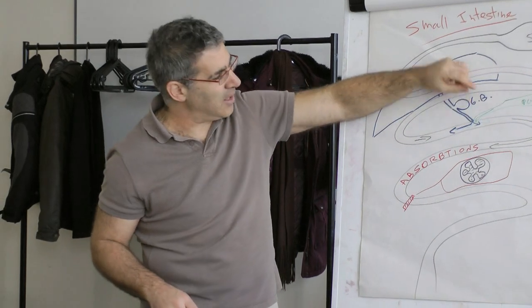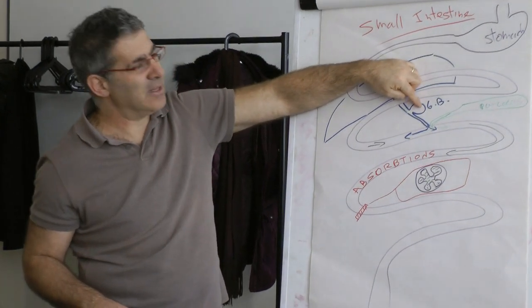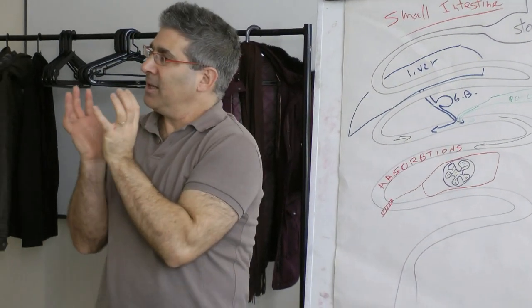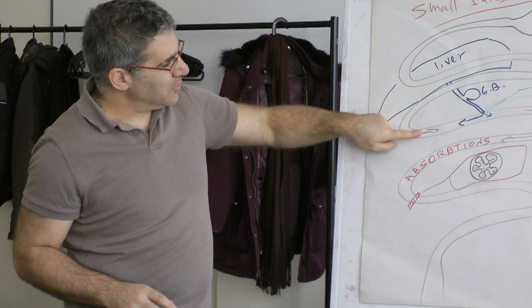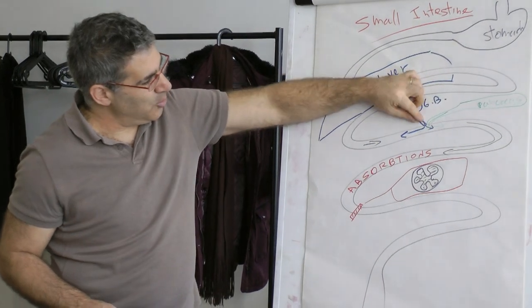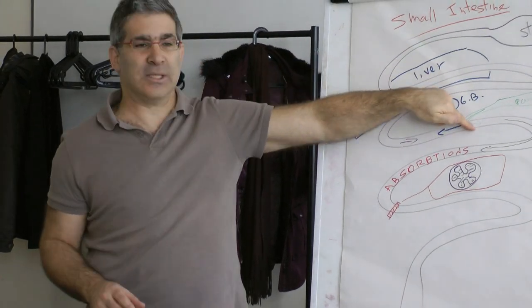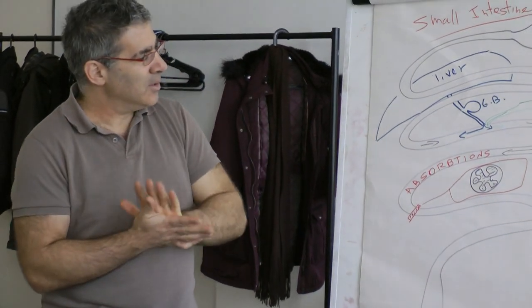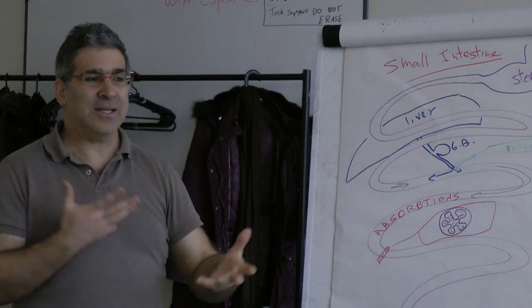You have the gallbladder is like a pocket that is filled with bile. Once food comes down there, it allows the tube here to open. The gallbladder contracts and then the bile goes into the intestine, and that's how it mixes. So one problem if you have the gallbladder removed is that you never have enough bile once the food comes, and then your digestion may not work well.